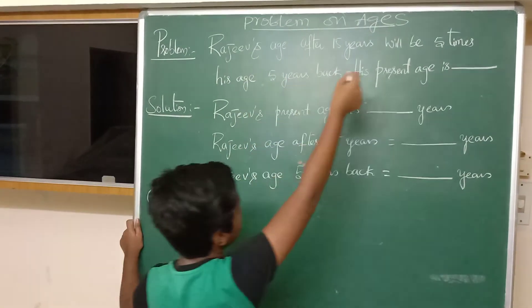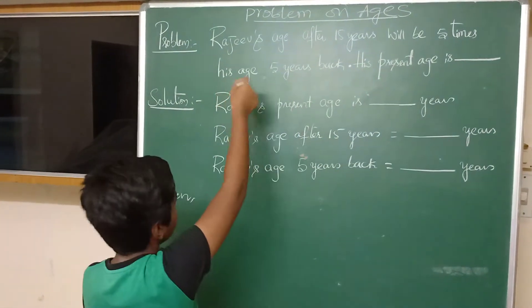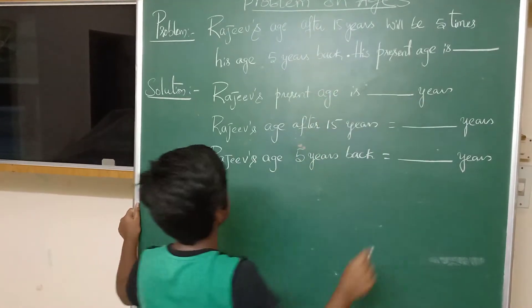Rajiv says after 15 years will be 5 times of his age 5 years back. His present age is?